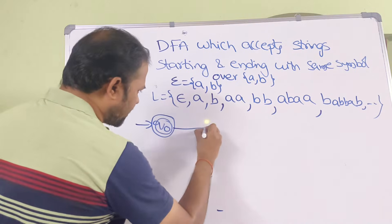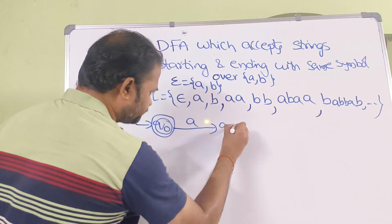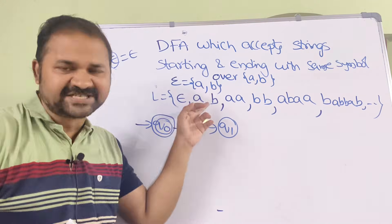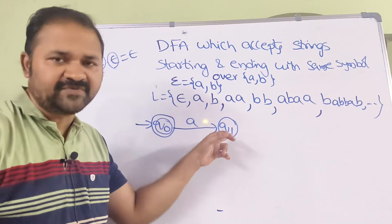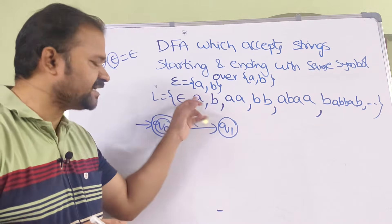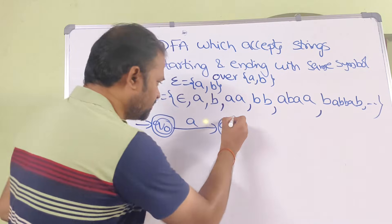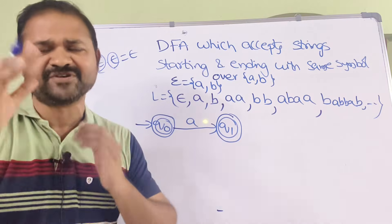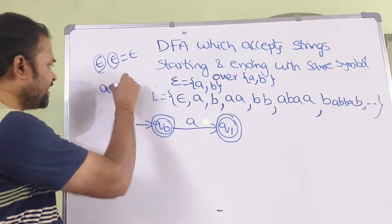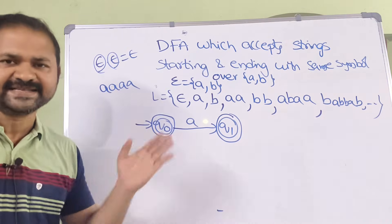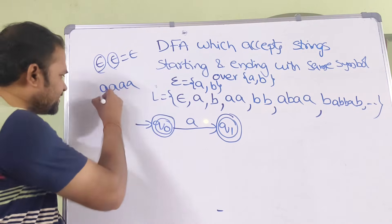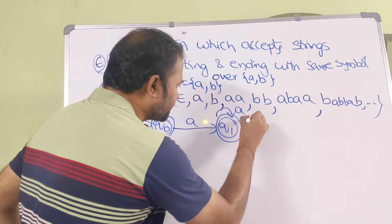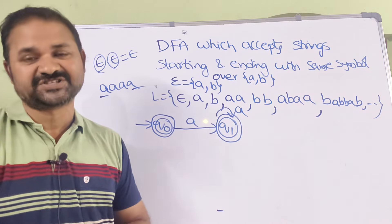Q0 on A goes to Q1. Since A is a valid string, Q1 is also a final state. On Q1, if we apply any number of A's we remain in Q1, which stays a final state — for example, AAAAA is a valid string because it starts and ends with the same symbol A.